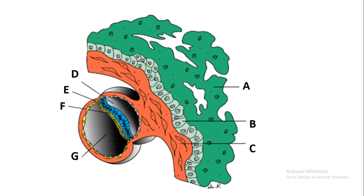We have been given this diagram and asked to label it. You need to understand that during week 3 the embryo has three germ layers: the mesoderm, endoderm, and ectoderm. These germ layers are coming from the bilaminar disk which was formed in week 2.